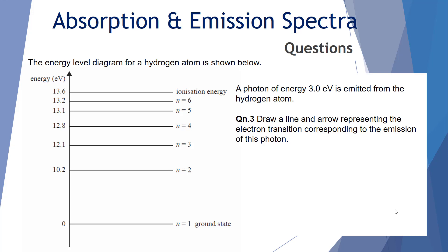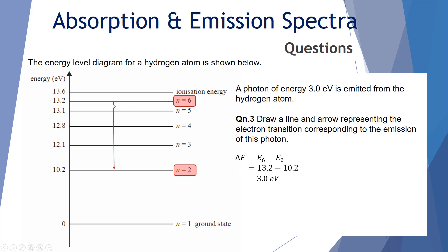Question 3: A photon of 3 electron volts is emitted from the hydrogen atom. Draw a line and arrow representing the electron transition. Somewhere there's a transition with a difference of 3 eV between two levels — that's between n equals 6 and n equals 2 (13.2 minus 10.2). For that photon to be emitted, the electron must drop from n equals 6 to n equals 2, so the arrow must be drawn downwards from n equals 6 to n equals 2.